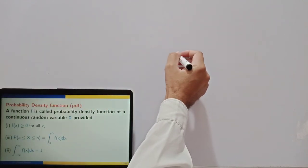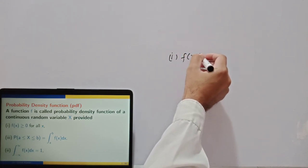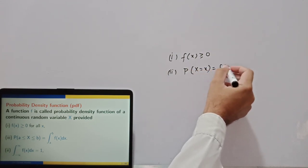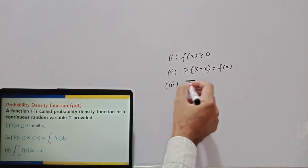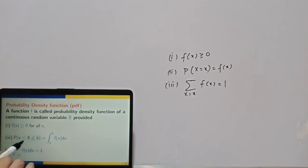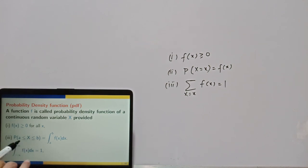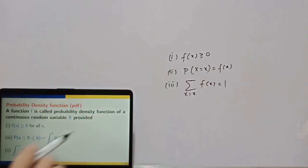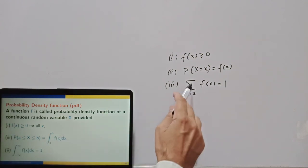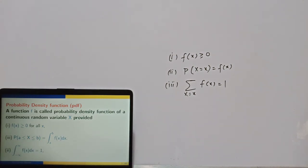In the discrete case, f(x) is greater than or equal to zero, the probability for any particular value of x is given by f(x), and the sum of all values of f(x) is one. The key difference is that in the continuous case, probability is given over an interval by an integral, and the summation sign changes to an integral sign.